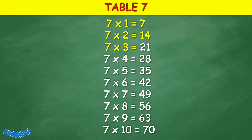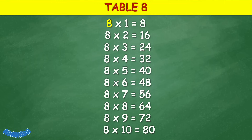Table 7: 7 times 1 equals 7, 7 times 2 equals 14, 7 times 3 equals 21, 7 times 4 equals 28, 7 times 5 equals 35, 7 times 6 equals 42, 7 times 7 equals 49, 7 times 8 equals 56, 7 times 9 equals 63, 7 times 10 equals 70.